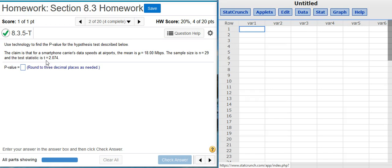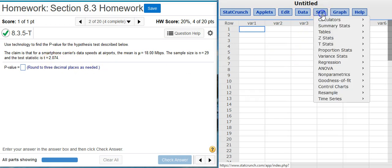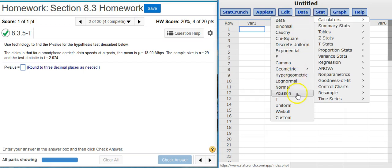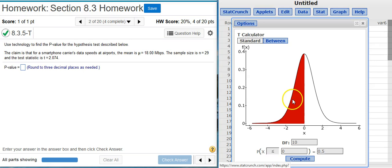So I'm going to call up StatCrunch here. Inside StatCrunch, I'm going to go to Stat, Calculators, T, because I want the student t distribution. Now here's my student t calculator.